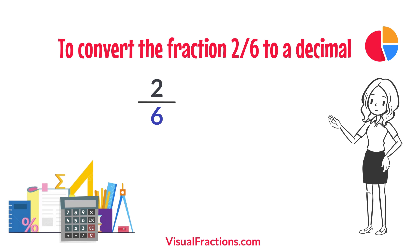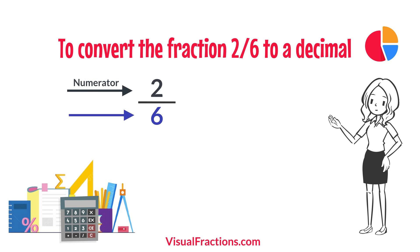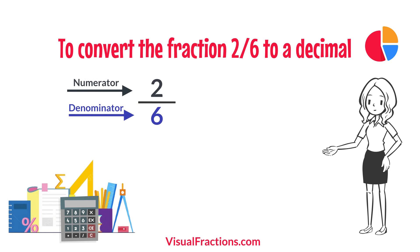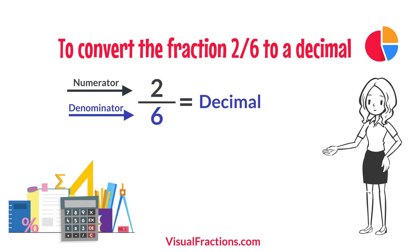To convert the fraction 2 sixths to a decimal, all we need to do is divide the numerator, the top number, by the denominator, the bottom number. In this case, we want to convert 2 sixths to a decimal, so we simply divide 2 by 6.